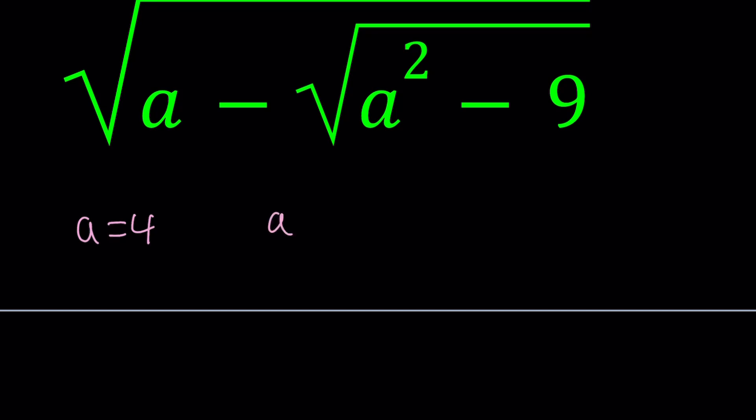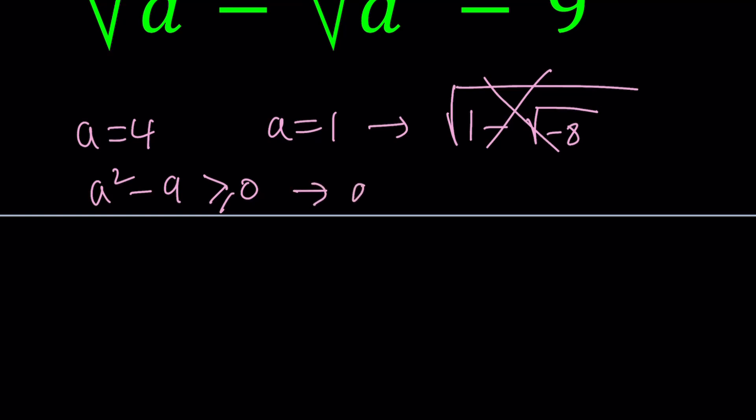What happens if you replace a with one? You get the square root of one minus the square root of one minus nine which is negative eight. We get a complex non-real number. So we have to be careful. We kind of need to think about the domain. So a squared minus nine needs to be greater than or equal to zero, which implies that a is greater than or equal to three or a is less than or equal to negative three. Obviously you can solve this by factoring using difference of two squares.